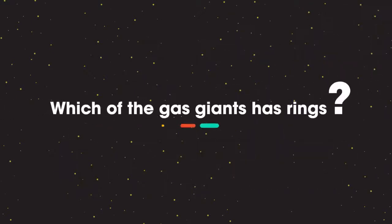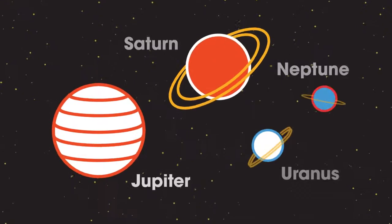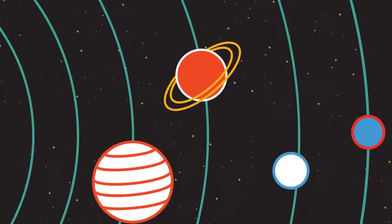Which of the gas giants has rings? Pause the video while you think of an answer. The answer is that all four of them have rings, but only those of Saturn are visible from the Earth.